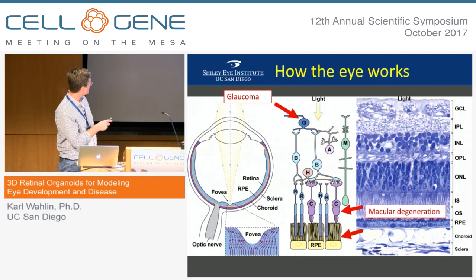This is an example of an eye. Light passes through the lens here and falls on a thin film of tissue in the back called the retina, which is composed of a variety of different neurons.